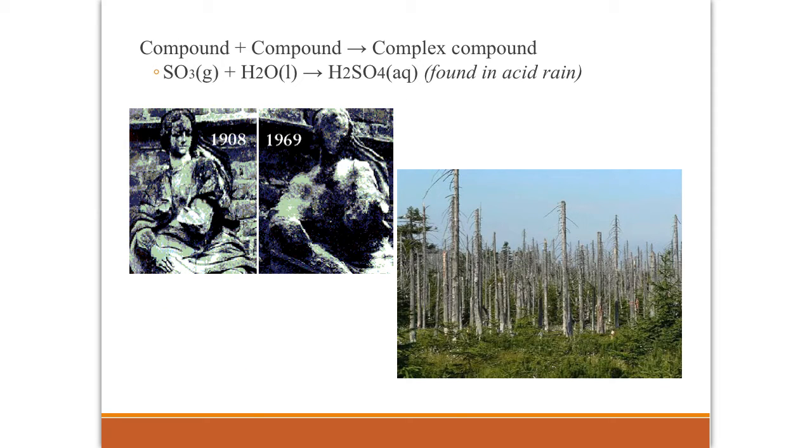And then finally, we can have two compounds combining to make a more complex compound. So sulfur trioxide, which is one of the common pollutants in the air from industry, from factories, can combine with water in the air to produce H2SO4, which is sulfuric acid. And that is what is found in acid rain.